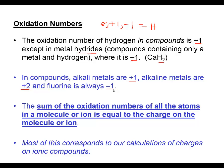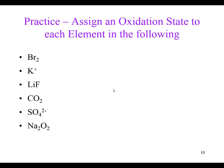Let's consider a few compounds and assign some oxidation numbers. First, let's consider elemental bromine - when bromine is combined with itself and there's no charge on this species, the oxidation number for bromine would be zero. Each bromine has an oxidation state of zero.